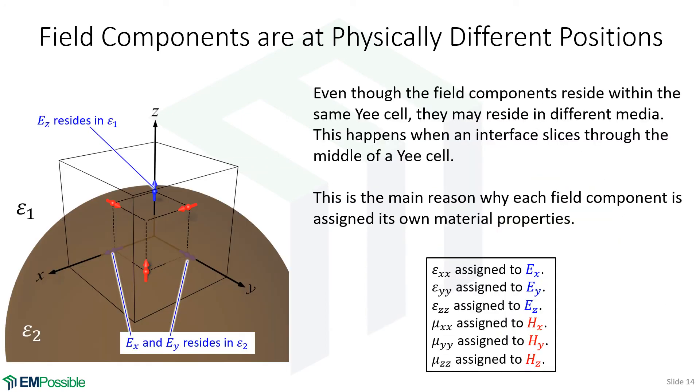Similarly, if we have some kind of material, and let's say it slices through the middle of a Yee grid cell, that can actually place some components inside one medium and other components in another. Even though they're all the components of one single vector quantity within a single Yee grid cell, just the fact that we might have some curved surface can actually place some in one material and some in another.